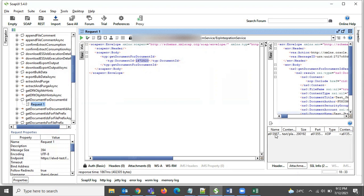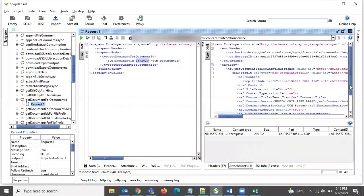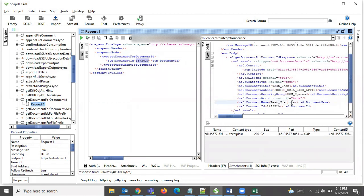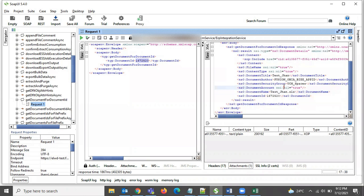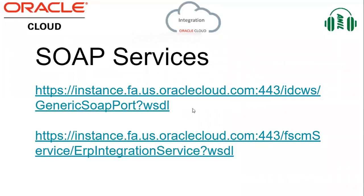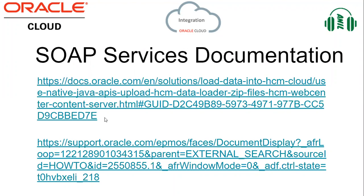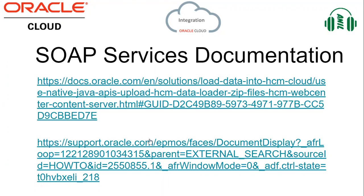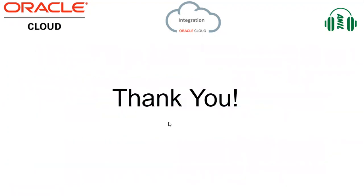Let me open the response details. You can see 'test_journal' and 'test_journal.xsl' — this is the same file I just downloaded. These are the two services we can use to download a file from UCM. The first URL is for the Generic SOAP documentation and the second is for the ERP Integration Service documentation. I'll provide these URLs and documentation details in the video description. In the next video, I will show you how to download a file using REST API. Thank you and good luck.